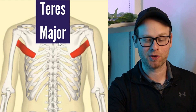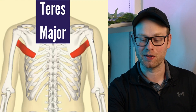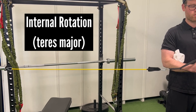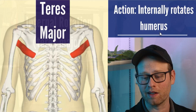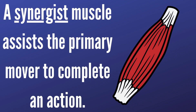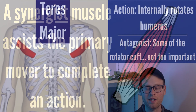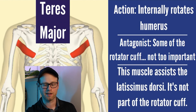The teres major is probably the least important muscle we're going to talk about today. It internally rotates the humerus and basically assists a lot of the things the latissimus dorsi does — so teres major is really more of a synergist, meaning it helps out the lats. Because this muscle is much more of a synergist, we don't need to worry too much about its antagonists. It does assist the lats and is not part of the rotator cuff.